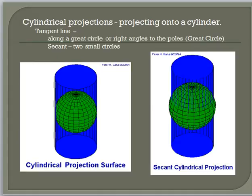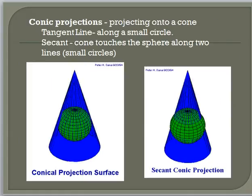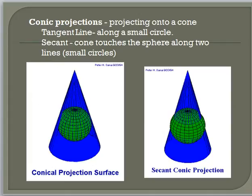Here's a better image of a cylindrical tangent versus a cylindrical secant, where you would have two lines of tangency. And an example of a conic projection where it touches on one latitude, and a secant conic which goes through the surface with two parallels — one line of latitude on the tangent and two lines of latitude on the secant — that add accuracy.